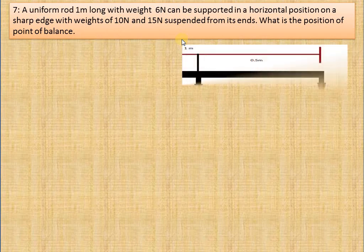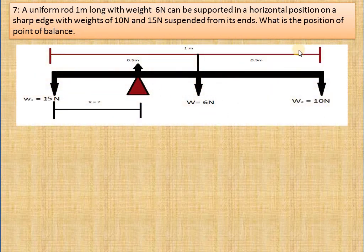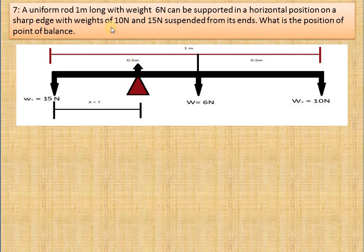This question is that you have a uniform rod with a length of 1 meter and its weight is 6 newton. If you have a uniform rod, its weight will be exactly in the center. We have to support it in a horizontal position on a sharp edge, with weights of 10 newton and 15 newton suspended from its ends so that it will be balanced. One is 15 newton and one is 10 newton.